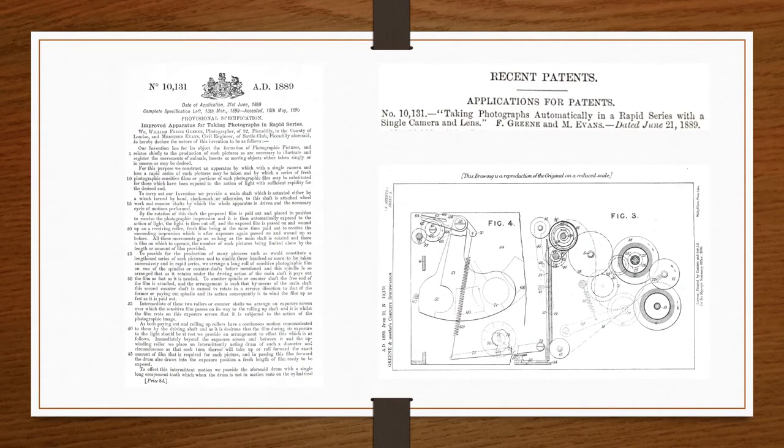Something like this, a device for taking photographs automatically in a rapid series with a single camera and lens. Quite a significant combination of statements there. So they were creating a camera to, on a roll of film, paper, and then celluloid when they could get their hands on it, for taking a rapid series of pictures.